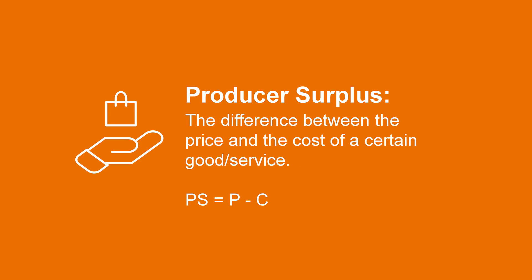Producers also can experience a surplus and it's easy to calculate. It results from the difference between the actual price and the cost that the seller had to incur in order to make the production. As you may see, this calculation is analogous to the estimation of profits — the revenue minus the costs. The producer surplus is the benefit that the producer obtains from selling a good with a margin or a markup. The producer has costs to produce: rent, raw materials, energy, wages, etc. And then sets a price higher in order to obtain profits, or in this case, a surplus.